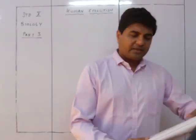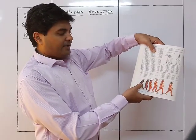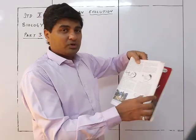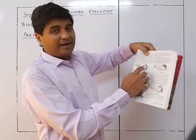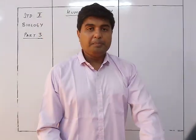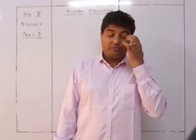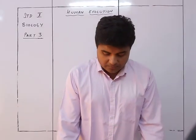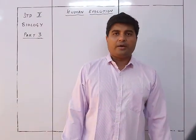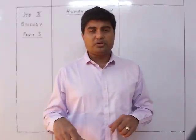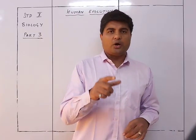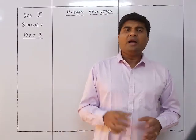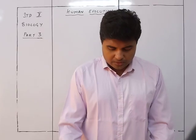Looking at the figure of Rameopithecus, it is bipedal but not completely straight. This one is the Australopithecus. These figures need to be seen properly because in the board exams they do ask you to identify what is this particular stage of human evolution and write one or two properties. My textbook is slightly older so it doesn't have one table which is there in the new textbooks, but that table is extremely useful for learning.